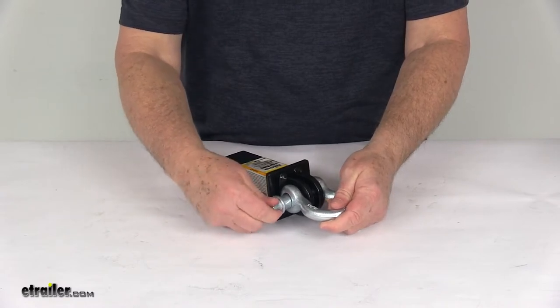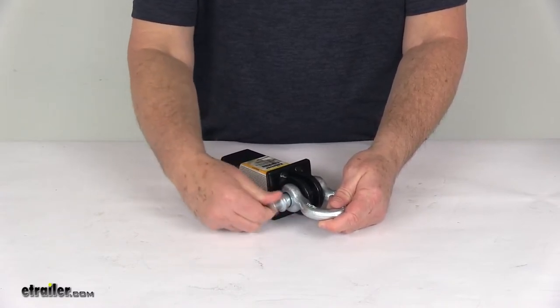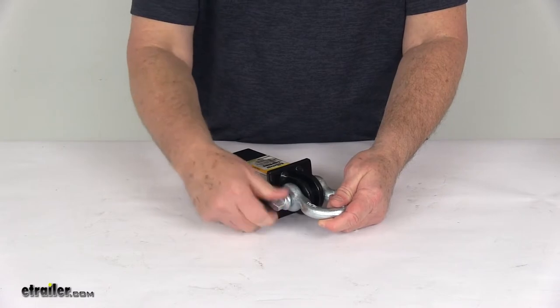Otherwise you can just go ahead and insert it back in and then just tighten this down to hold the loop to the shank portion.